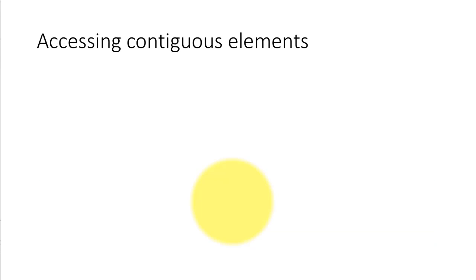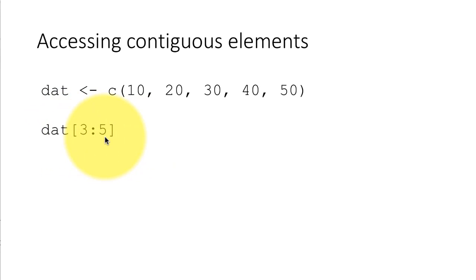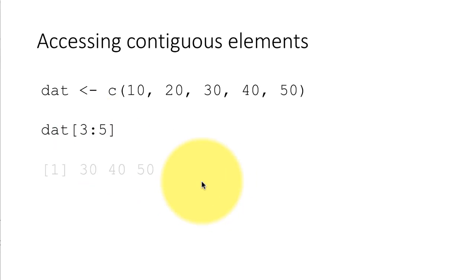One kind of subsetting takes place when we access contiguous elements — that is, elements which are next to each other. For example, with the same vector 10, 20, 30, 40, 50, if I want elements in positions 3 to 5, I can say dat[3:5]. This resembles the Excel range operator colon, though in R the colon operator actually produces a vector. This is how you access contiguous elements, and as expected we get 30, 40, 50.